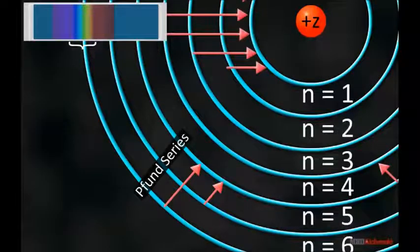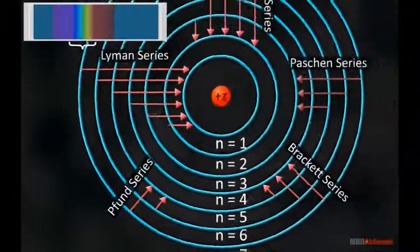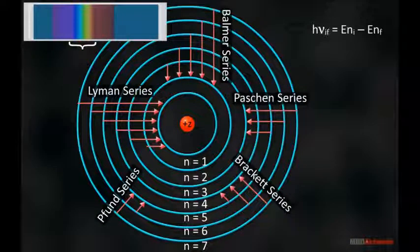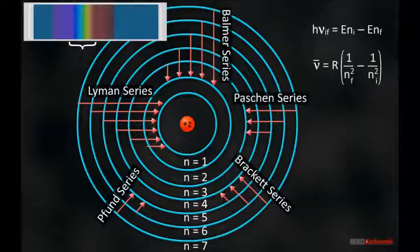The energy of emitted radiation is given by the formula shown here, and the Rydberg formula for the spectrum of hydrogen atom is given by the formula as shown here.